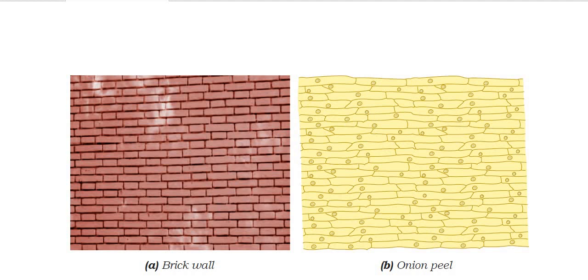Let us observe the picture here. This is a brick wall and onion peel cells. Just as bricks are arranged systematically in a wall, cells are also arranged in a systematic order — we can observe this comparison.